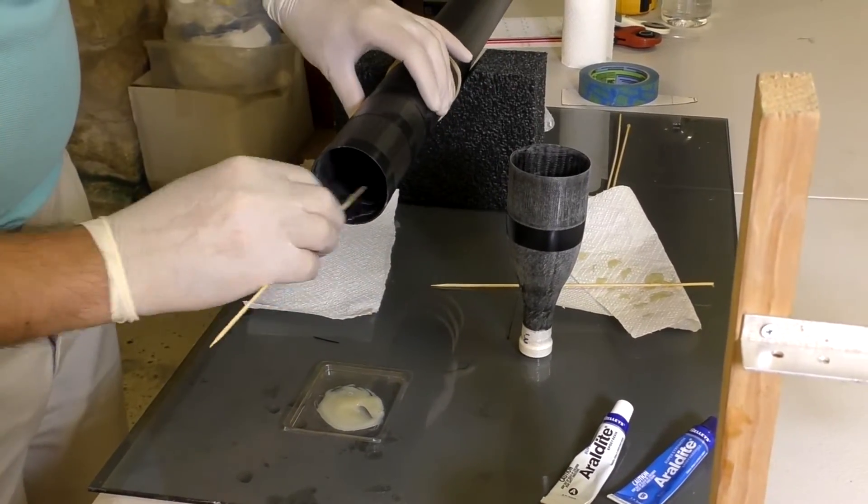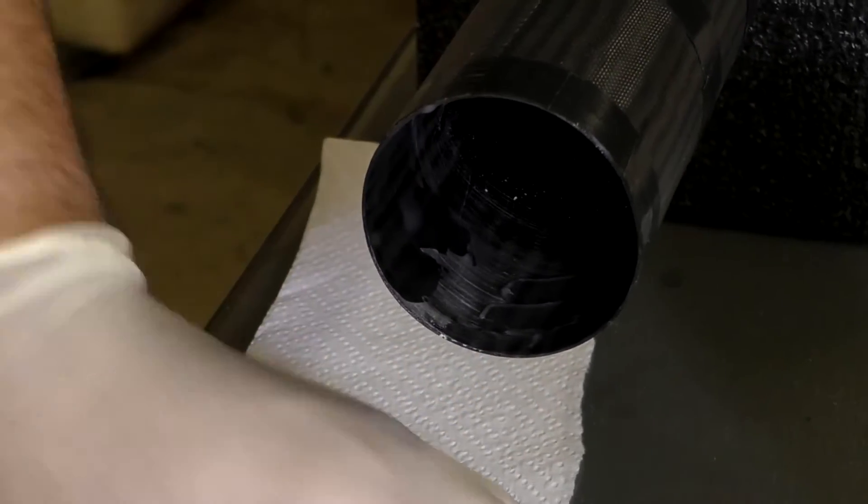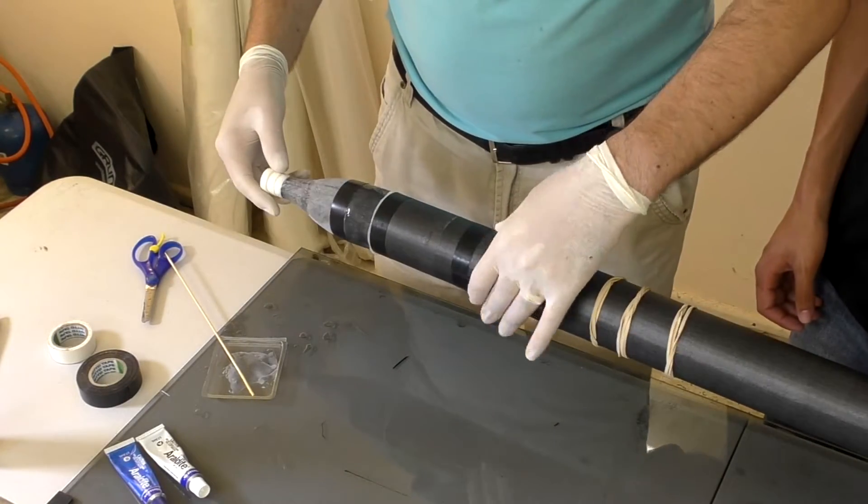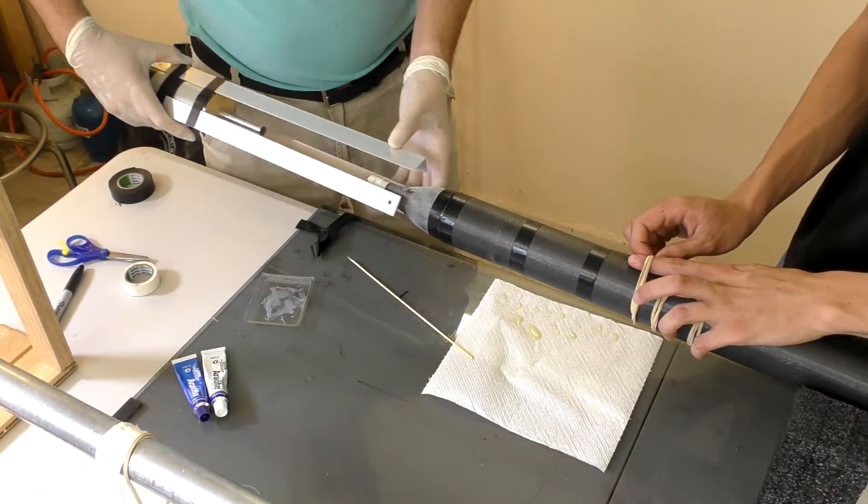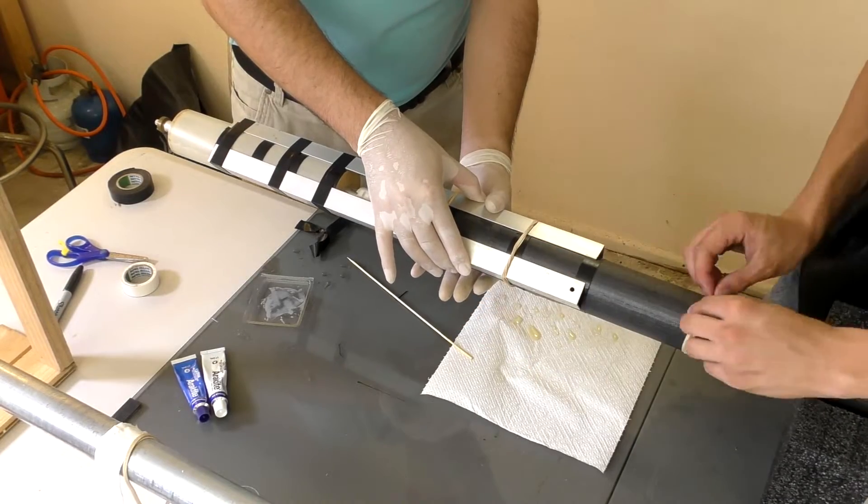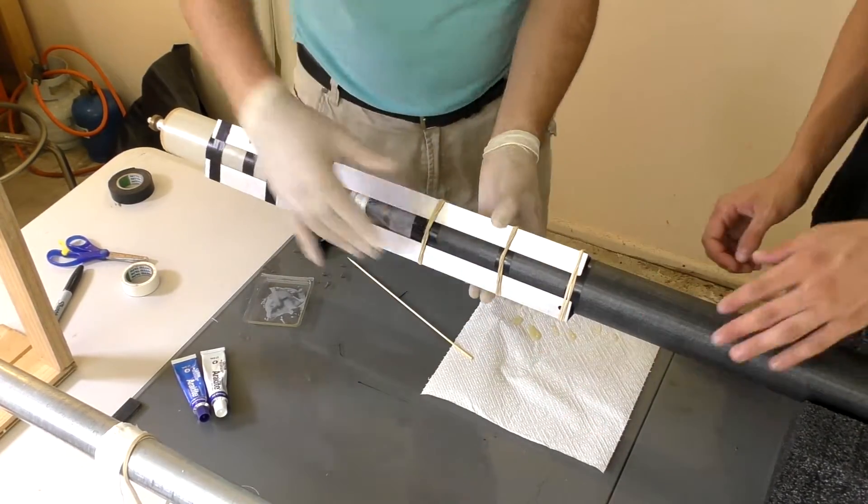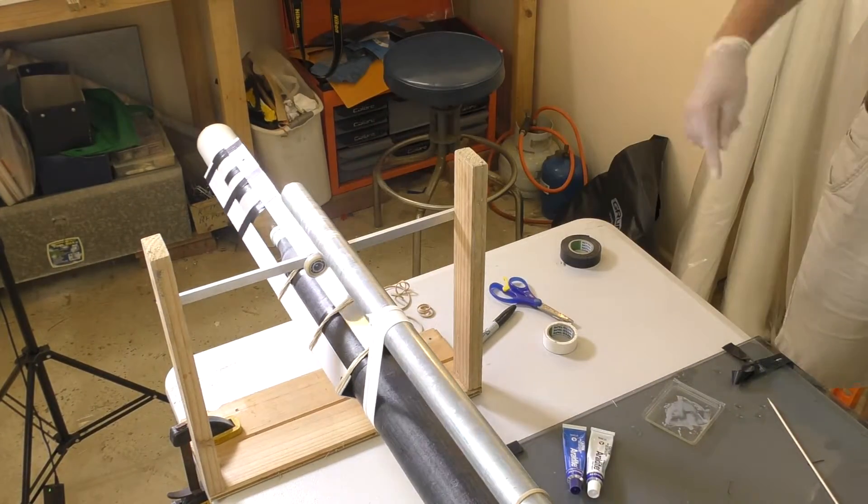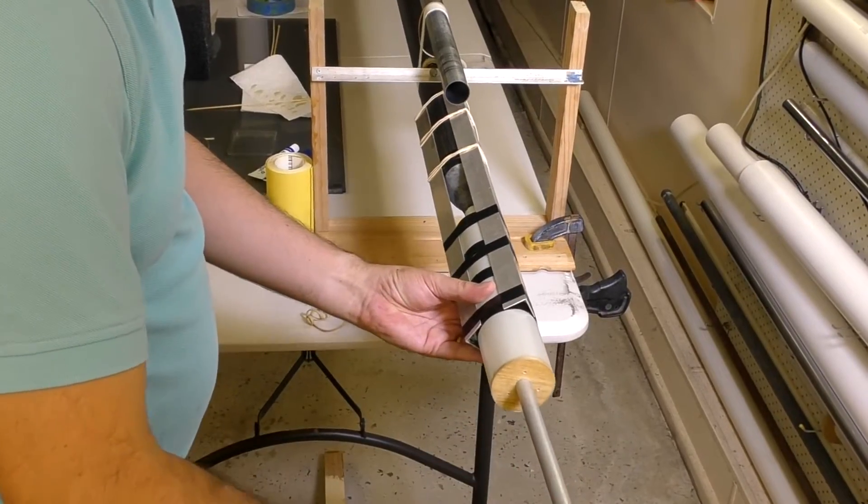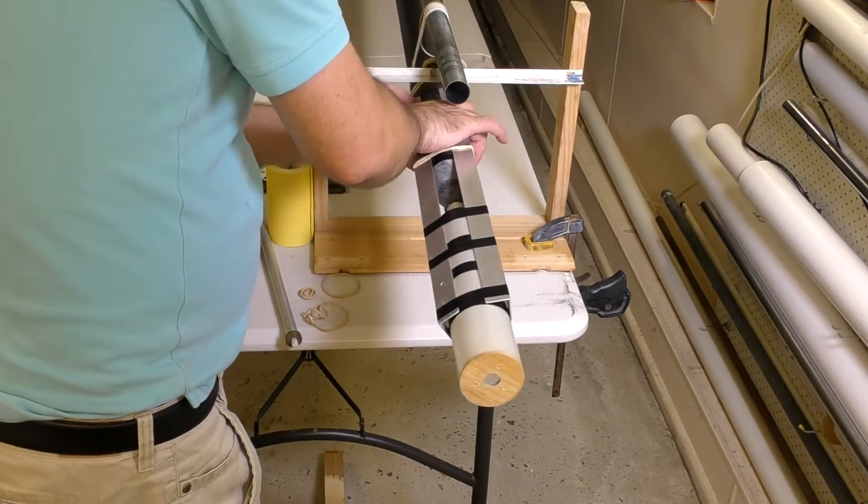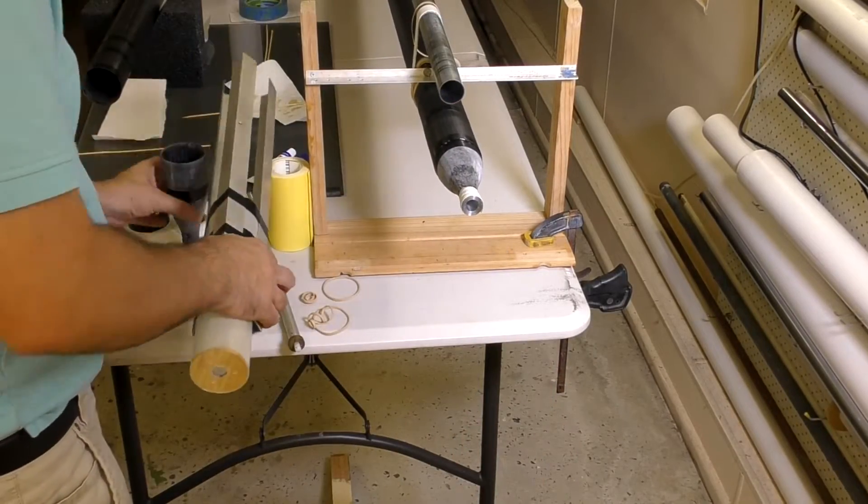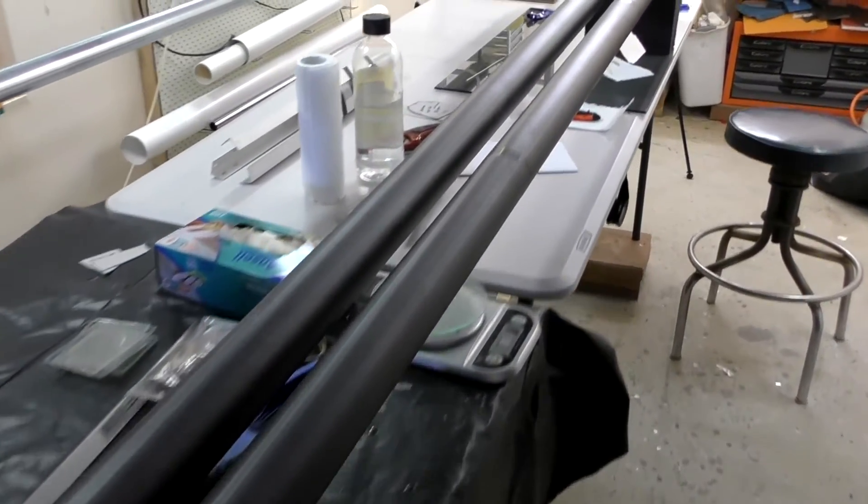Now we glue in the nozzle end cap. This is done in exactly the same way as the top end cap. This time however, we insert the alignment jig into the nozzle. This makes sure that the nozzle hole is aligned exactly with the centerline of the pressure chamber body tube. The whole thing again goes on the rotisserie. The next day we can remove the alignment jig again, and now we have a couple of inner liners complete.